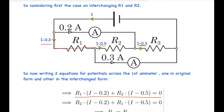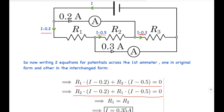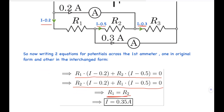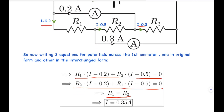Now exchanging R1 and R2 — the currents remain the same, so the potential difference equation again holds. Writing the new equation after interchanging R1 and R2: R2×(I−0.2) + R1×(I−0.5) = 0. From these two equations we can clearly see that R1 must equal R2.